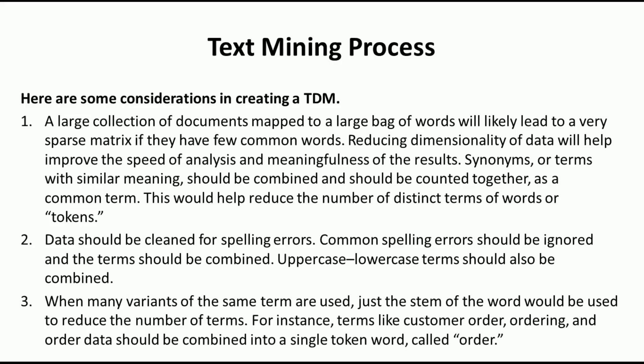Whenever creating a term document matrix, we need to clean the data for spelling errors. For example, people write 'BCZ' for 'because' or 'COLLL' instead of 'cool' — convert those into proper words. Uppercase and lowercase letters don't matter in text mining, so they can be combined into one word. When many variants of the same word are used, such as 'order', 'ordering', 'ordered', we can represent that word just once in the term document matrix.